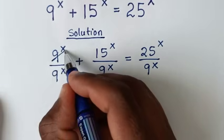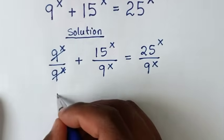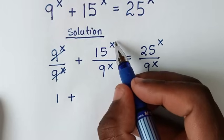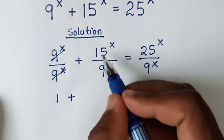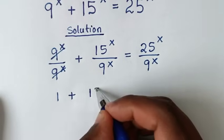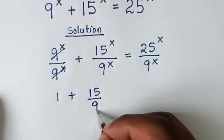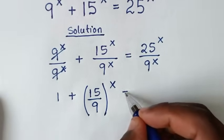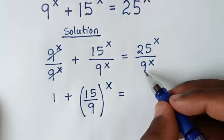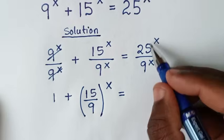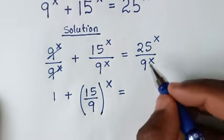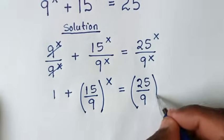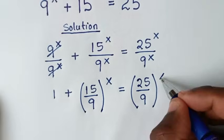Then from here, 9 power x divided by 9 power x is 1, plus 15 over 9 to the power of x, is equal to 25 over 9 to the power of x.